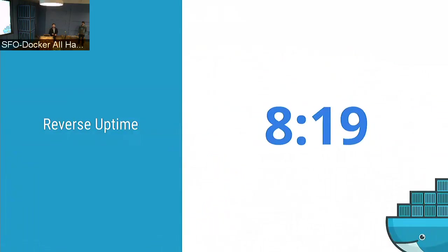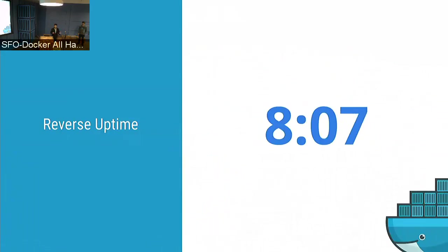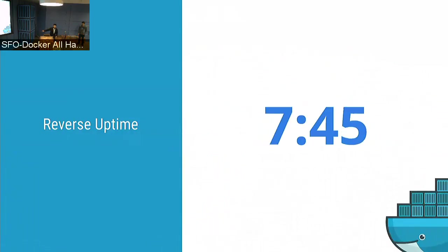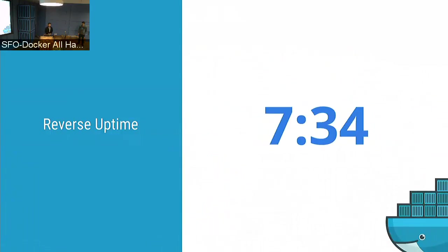Reverse uptime is important for three reasons. First, it prevents configuration drift. Second, you want frequent kernel updates because kernel patches bring security fixes — many bugs live in the kernel for years before being patched, and you want your infrastructure to receive those patches. Third, if an attacker gets a backdoor into your infrastructure, reverse uptime removes their persistence by destroying the compromised OS and redeploying a new one, making it much harder to stay in your data center. Reverse uptime with immutable infrastructure is a key idea we want to push forward with LinuxKit, InfraKit, and other Moby components.